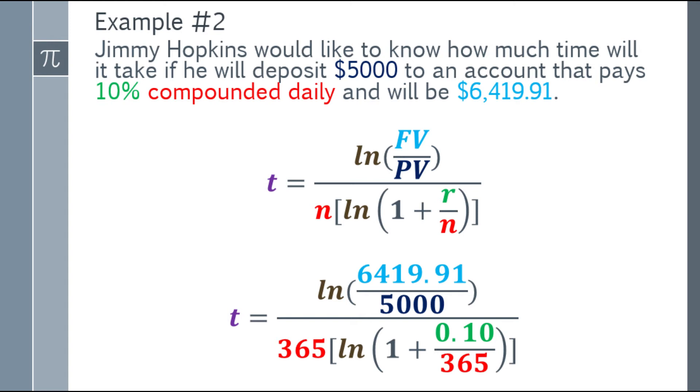Let's start with the numerator part. Time equals Ln of the future value over the present value. The future value is $6,419.91. The present value is $5,000. For the denominator part, it's compounded daily, so that will be 365. Times the quantity of Ln of the quantity 1 plus 0.10 over 365. Why 0.10 over 365? Again, 10%, change it to decimal. That will be 0.10 or 0.1. Compounded daily, so that will be 365.